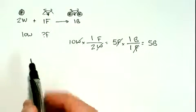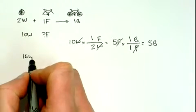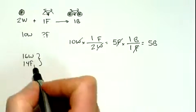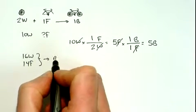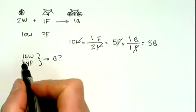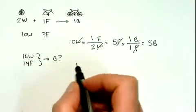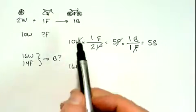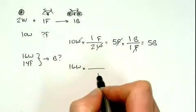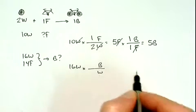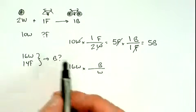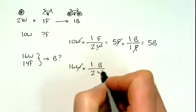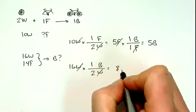Let's do another example, a little bit less simple. Say I have 16 wheels this time and 14 frames. I want to know, using those materials, how many bicycles can I make? Let's pick the 16 wheels to start. I'm going to get rid of wheels and get in terms of bicycles, because I want to know how many I could make if I used up all 16 wheels. It tells me for every two wheels I can make one bicycle, so this cancels out and I could potentially make eight bikes.